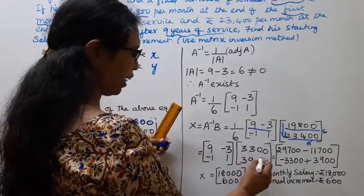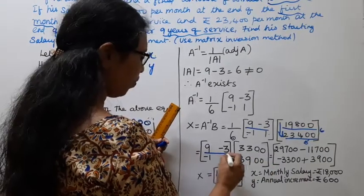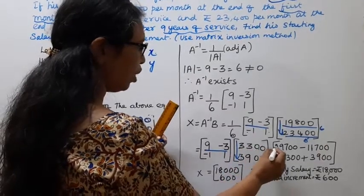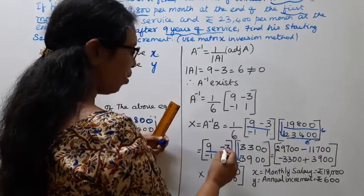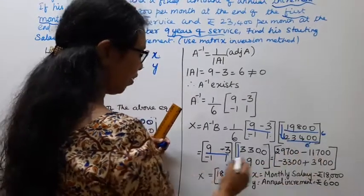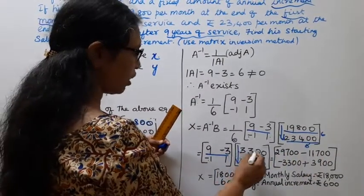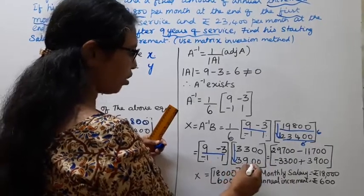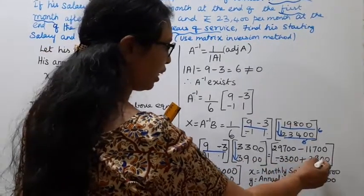Times 9 into 3300 equals 29,700. Minus 3 into 3900 equals minus 11,700. Minus 1 into 3300 equals minus 3300. 1 into 3900 equals plus 3900.